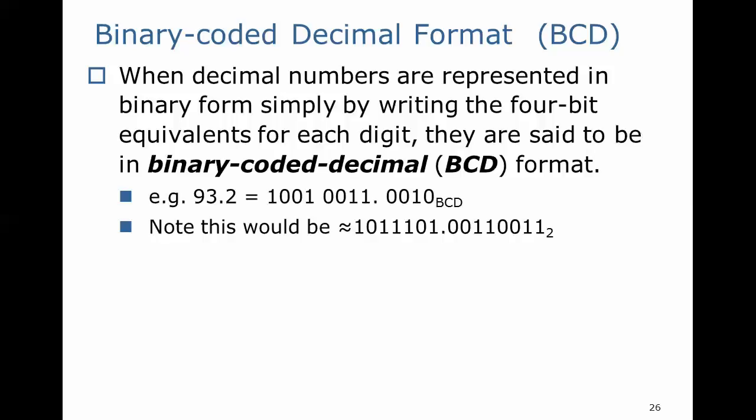In that case, what you do is if you want to display 93.2, you would take each individual decimal digit, so the 9, the 3, and the 2, and you would convert it to a 4-digit binary number. And that is convenient for some hardware that is trying to implement basically an LCD display.